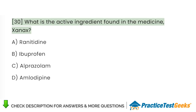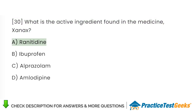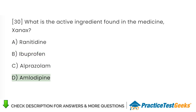What is the active ingredient found in the medicine Xanax? A. Ranitidine. B. Ibuprofen. C. Alprazolam. D. Amlodipine.